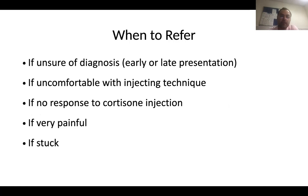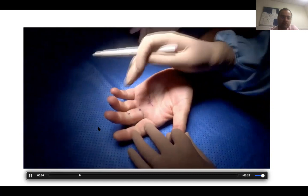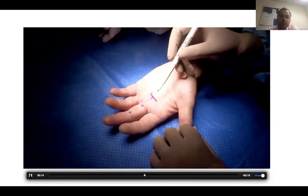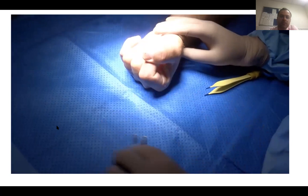When to refer: obviously if you're unsure of the diagnosis, if you're uncomfortable with injecting technique — I usually use a bit of local and then add cortisone — and if it's stuck and very painful, just refer on. This gentleman has triggering on the right middle finger. We're marking out the position of the transverse incision, the A1 pulley should be around here, and we're doing this under lignocaine adrenaline. A lot of procedures can be done under local with adrenaline — the so-called WALANT technique (wide awake local anaesthetic no tourniquet). After COVID-19, at the Royal Free we changed everything to pretty much local or regional anaesthetic. And you get immediate results from the release.